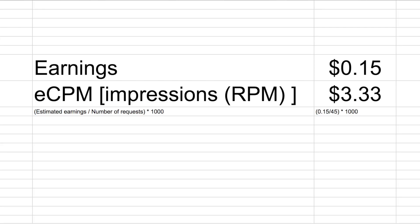Let's take an example. I had 100 requests, I got a match 90 times, impressions were around 45, and the revenue I got was $0.15. So how do we calculate eCPM? The formula is: estimated earnings divided by number of impressions, multiplied by 1000. So $0.15 divided by 45, multiplied by 1000 — our eCPM is $3.33.